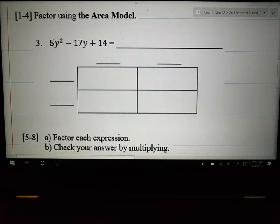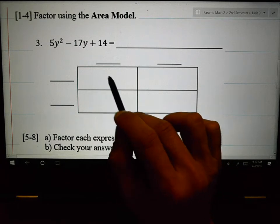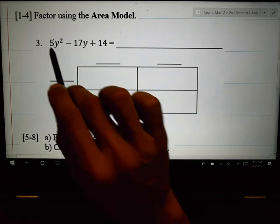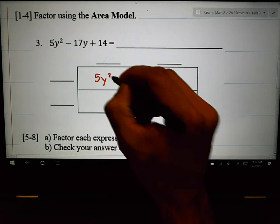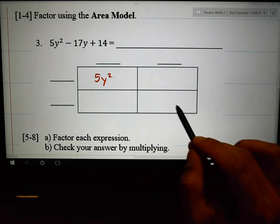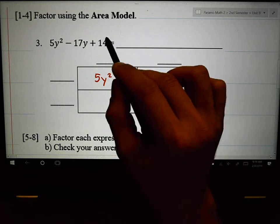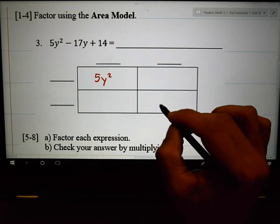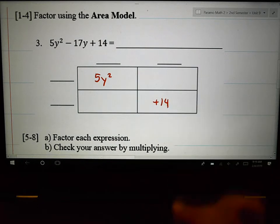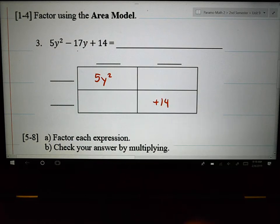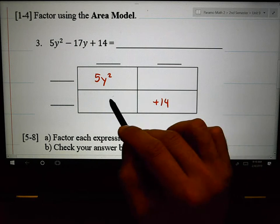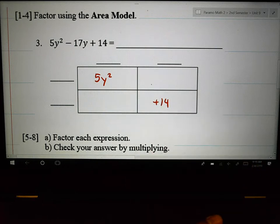What goes into the top left box, what goes in the middle and the bottom and so on. So I'm going to go back to where we were. If you forgot, what goes in this box is the first term. What I'm going to put here is 5y squared. What goes in the bottom right box is the last term. The last term plus 14 goes there.